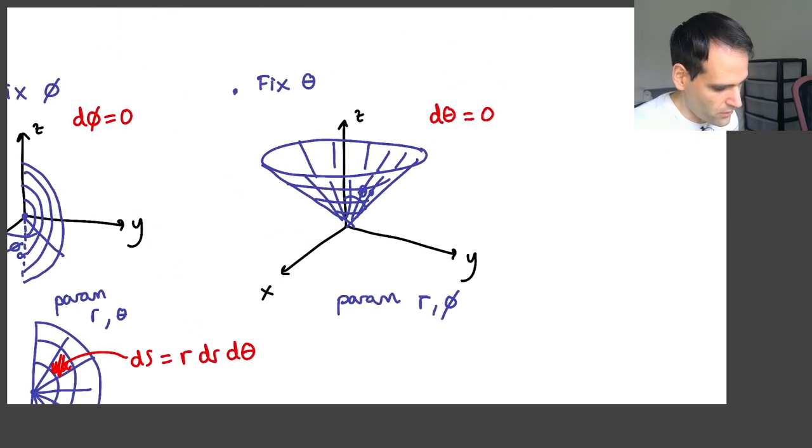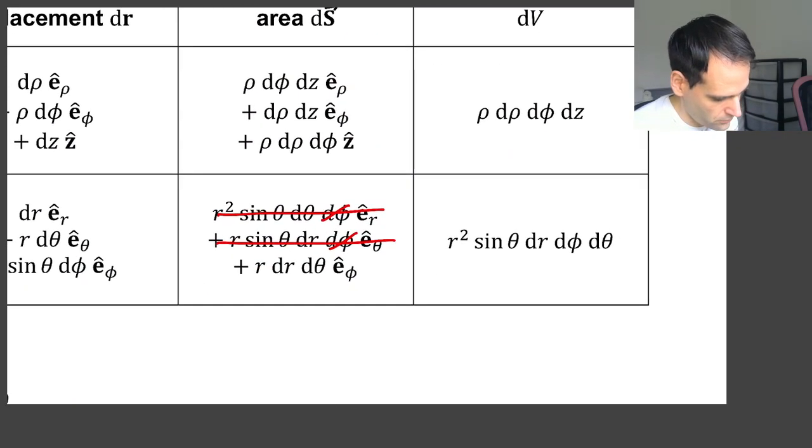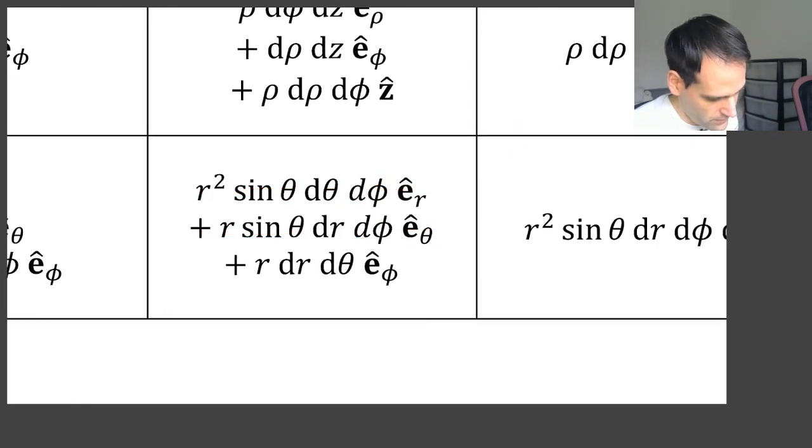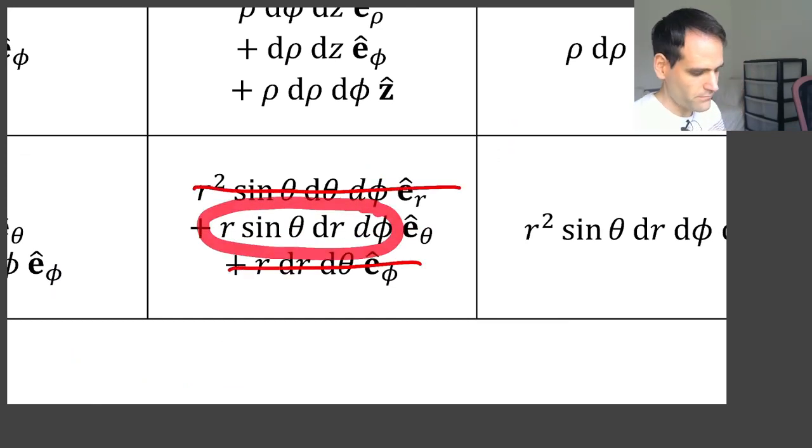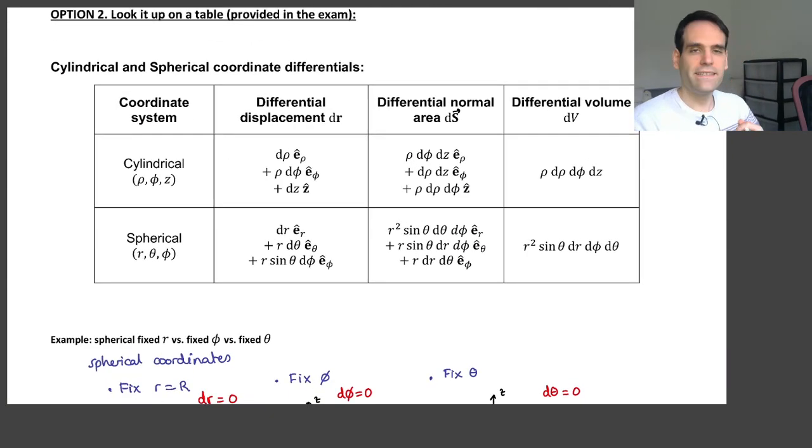And similarly for the cone, you just have to fix dθ equals 0. So therefore you would go here. You would fix dθ equals 0. So this goes away. This goes away. And you would be left only with this term. So by using this table, you can very quickly find the dS for typical cylinders, typical spheres, or even cones, and so on.